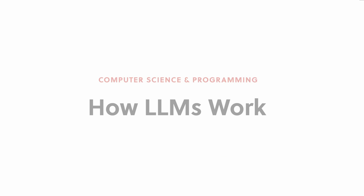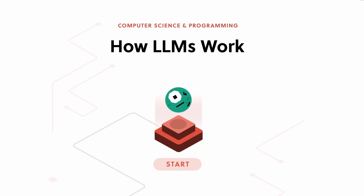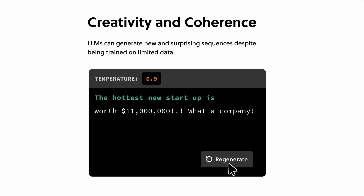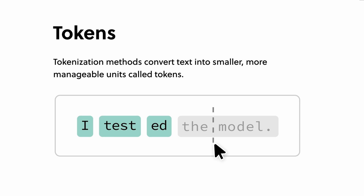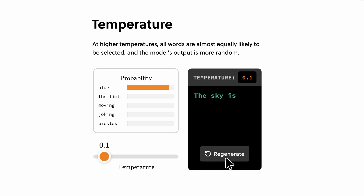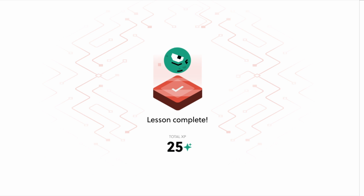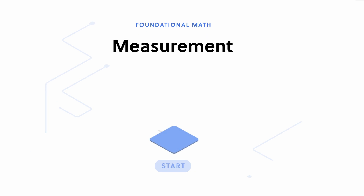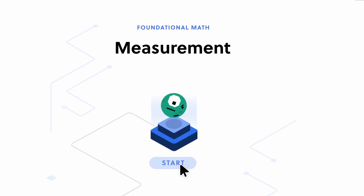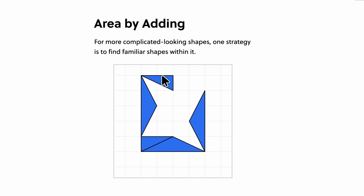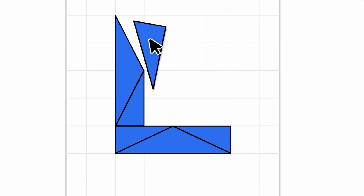Moreover, Brilliant's content is carefully prepared by an experienced team of educators, researchers, and industry professionals from prestigious institutions such as MIT, Caltech, Duke, Microsoft, and Google. Emphasizing critical thinking development through problem-solving rather than mindless memorization, Brilliant nurtures not only subject-specific expertise but also enhances cognitive abilities. By dedicating a few minutes daily to engaging with its enjoyable lessons, Brilliant empowers individuals to accumulate knowledge incrementally, fostering both personal and professional growth.